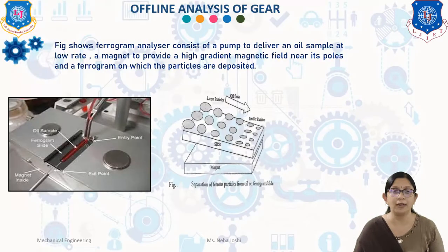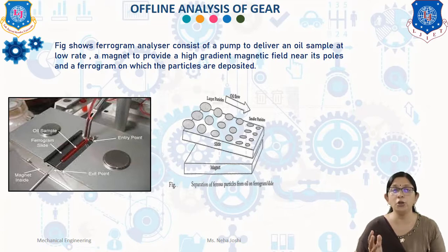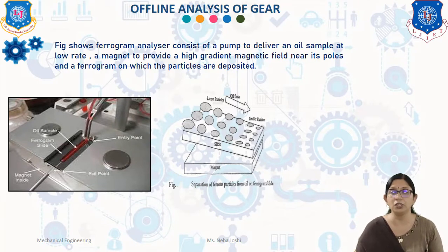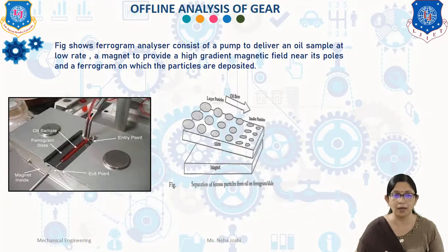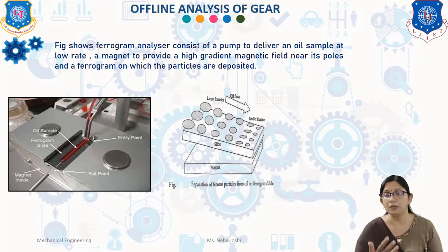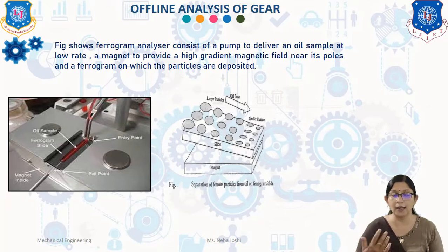The ferrograph analyzer consists of a pump to deliver an oil sample at a low rate, approximately 0.2 milliliters per minute, a magnet to provide a high gradient magnetic field near its pole, and a ferrograph on which particles are deposited. The oil sample, diluted with a special solvent to promote precipitation of wear particles, is pumped across a ferrograph mounted at a slight inclination. Larger ferrous particles are deposited near the entry zone where the field is weakest, and smaller particles are deposited further downstream. After particles have deposited on the ferrogram, a solvent is used to flush away the oil residue, and after the solvent evaporates, the wear particles remain permanently attached to the glass substrate and are ready for microscopic examination.